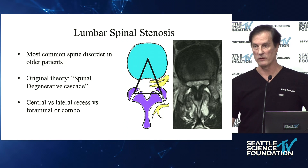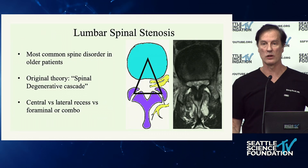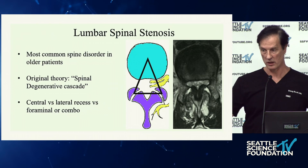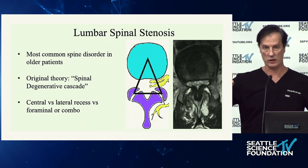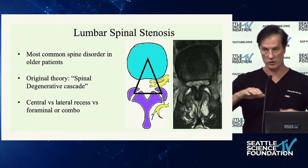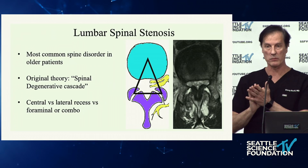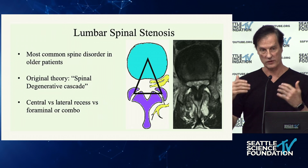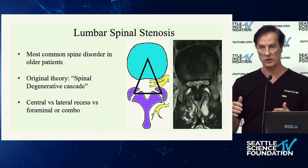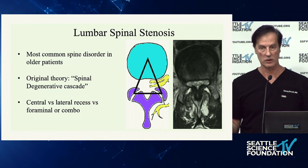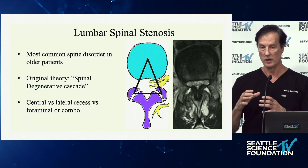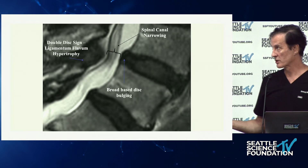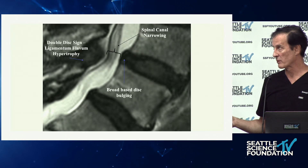This is the degenerative cascade. Typically what degenerates first — disc or facets? Disc. Then you have abnormal disc motion that translates into abnormal facet motion. The gliding motion goes to a rocking motion. The force gets transmitted to the back. Facets hypertrophy, the disc bulges. Then you get a trefoil shape — it narrows from a circular shape to a triangular shape. This is hypertrophy of the ligamentum flavum.